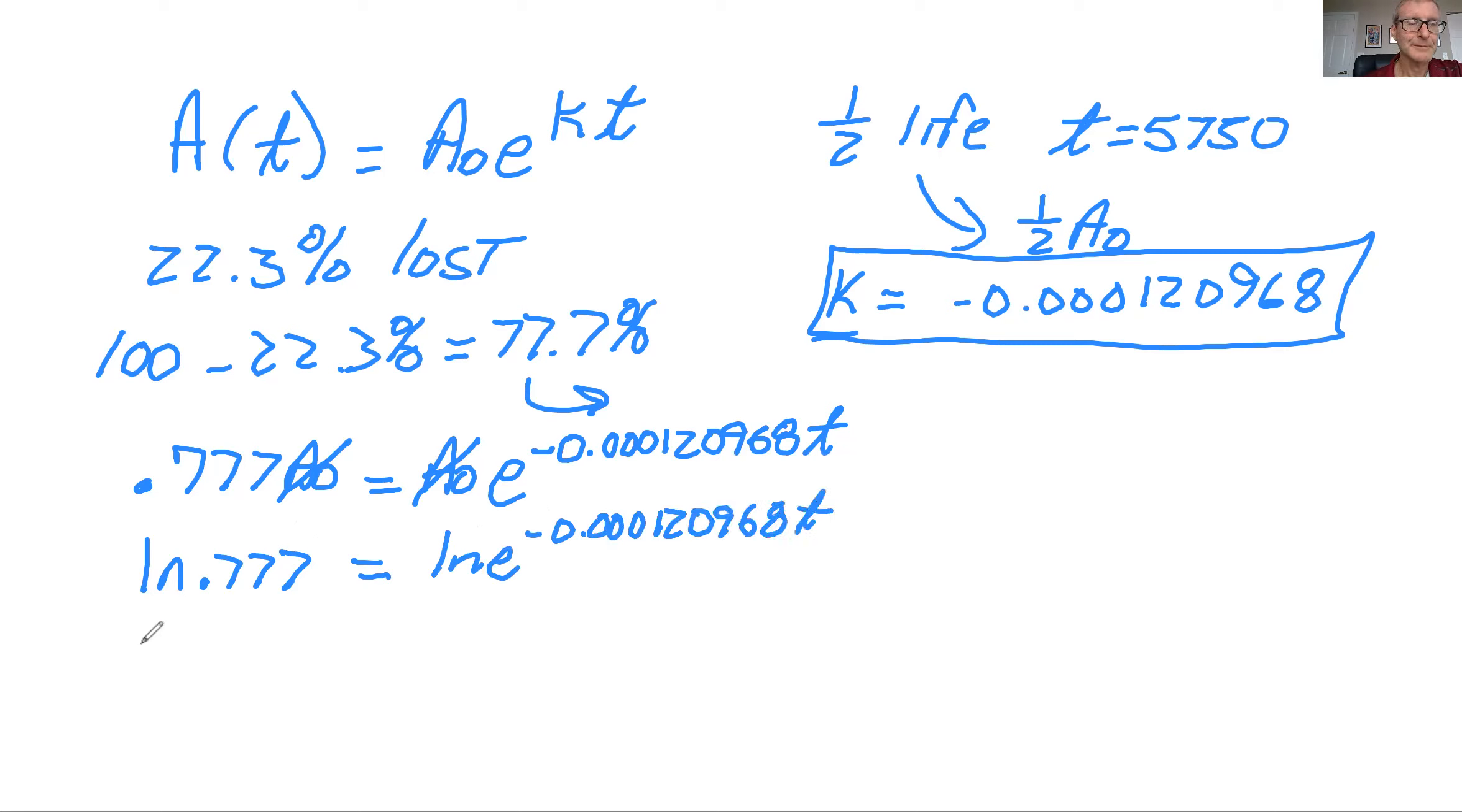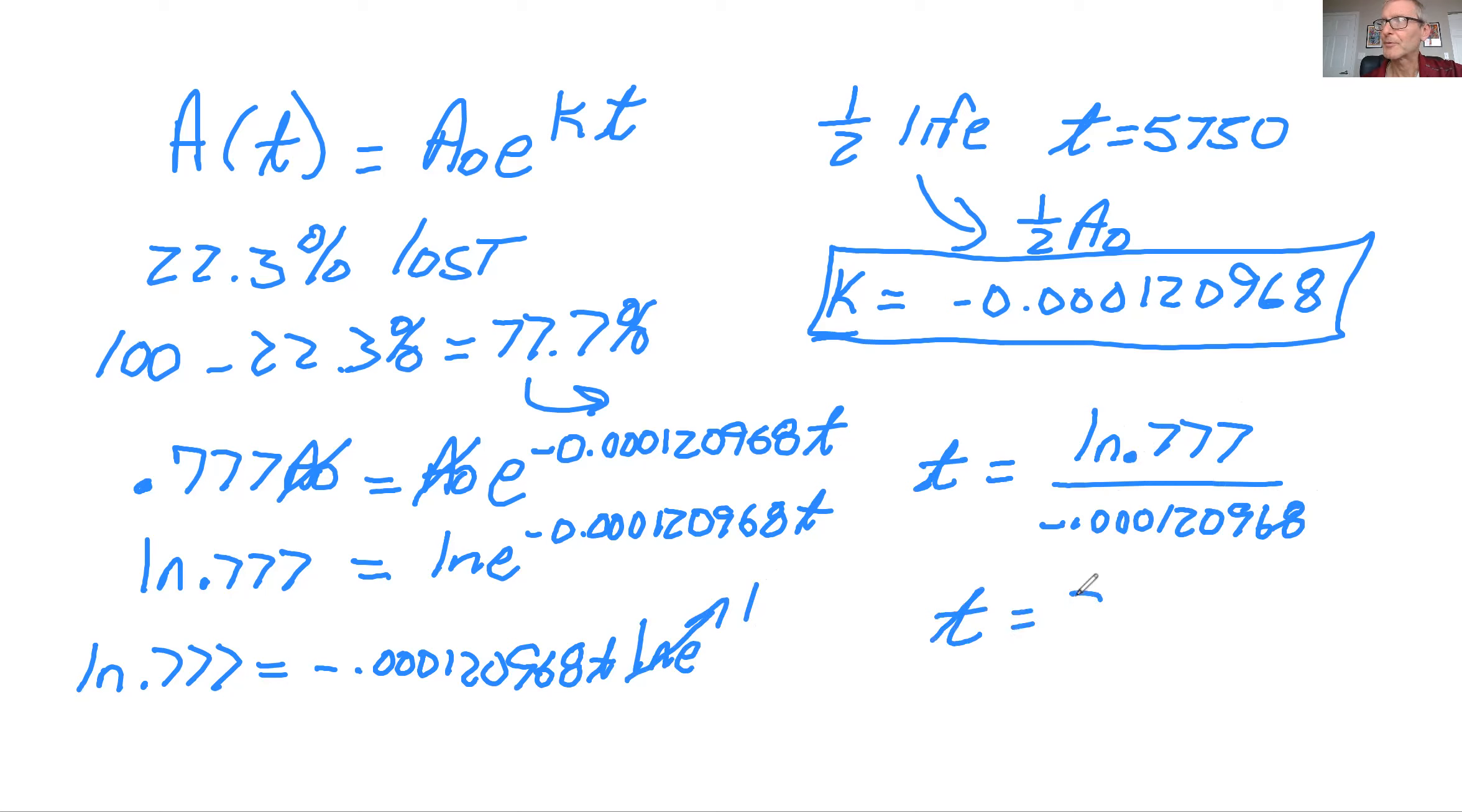Natural log of 0.777 equals natural log of e to the -0.000120968T. Power rule brings down the exponent. Natural log of e goes to one. And so here's what our T equals. So we'd have natural log of 0.777, which again will be a negative number, divided by another negative number, which is our K value. And so if you did that, you would see T would be approximately 2,103 years, rounding to the nearest year.